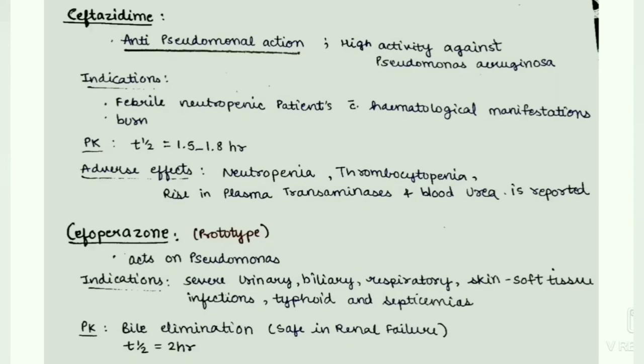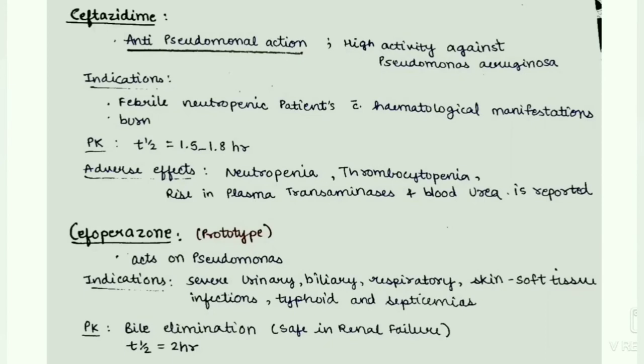Next, cefoperazone — the prototype drug. It acts on Pseudomonas. Indications are severe urinary, biliary, respiratory, skin, and soft tissue infections, typhoid, as well as septicemia. Pharmacokinetics: it has bile elimination, hence safe in renal failure. T-half is 2 hours. To summarize: two drugs with anti-pseudomonal action are ceftazidime and cefoperazone, and two drugs safe in renal failure are cefoperazone and ceftriaxone.